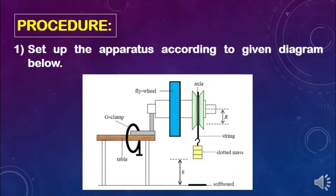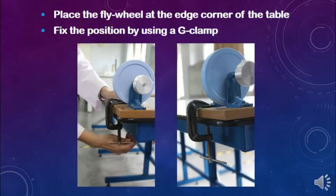Procedure 1: set up the apparatus according to the given diagram below. Place the flywheel at the edge of the table, then fix the position by using a G-clamp.